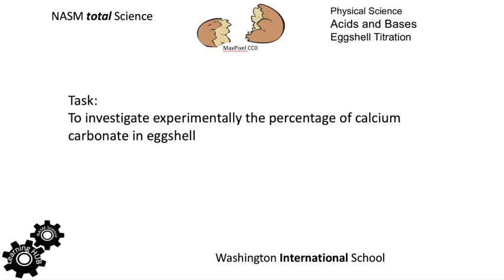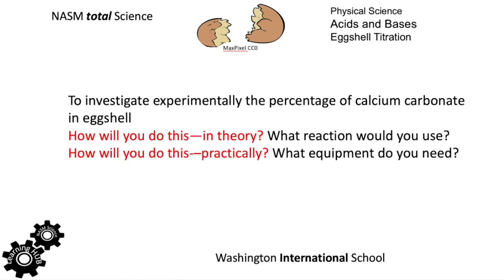We're going to look at an experiment which is going to use the properties of acids and bases to find the percentage of the compound calcium carbonate in some eggshell. And the first thing to do is to think about how you would do this theoretically. What reactions would you use? And then, having chosen that, what equipment would you need? So pause and answer those questions.